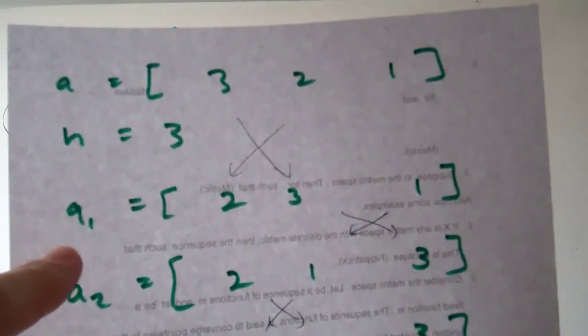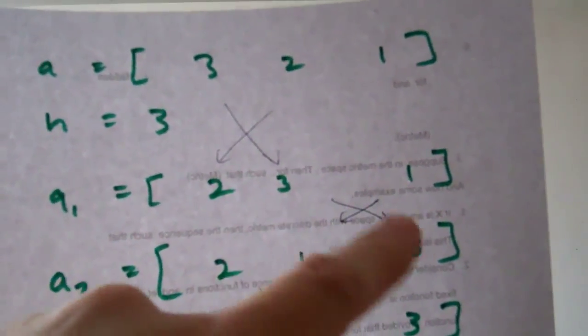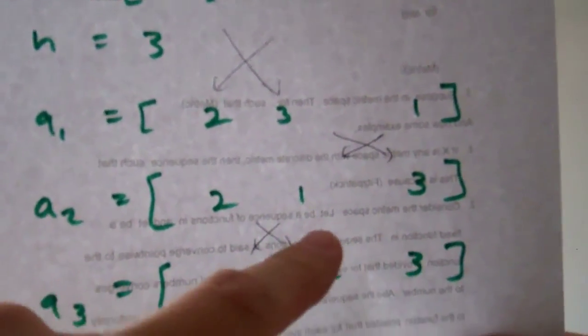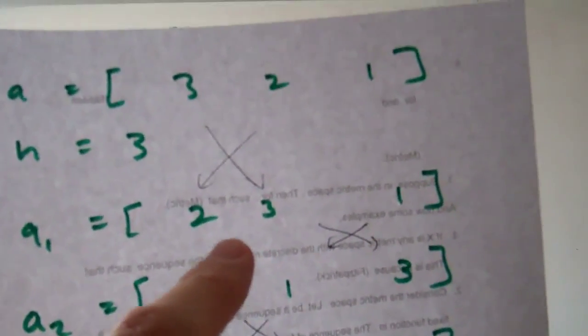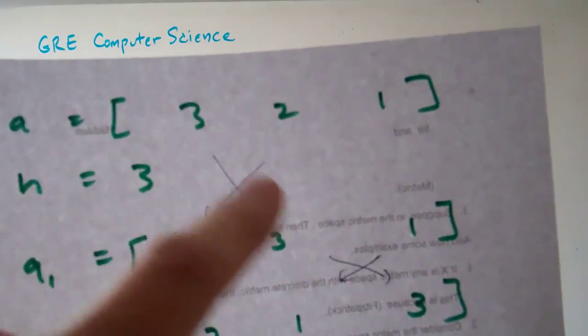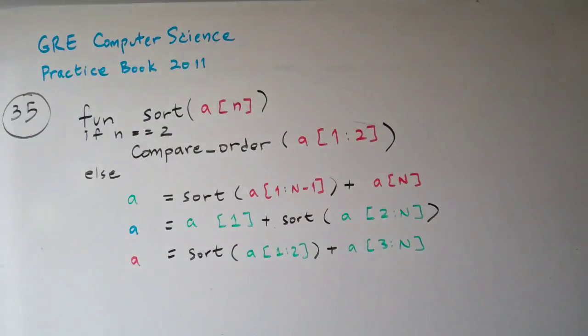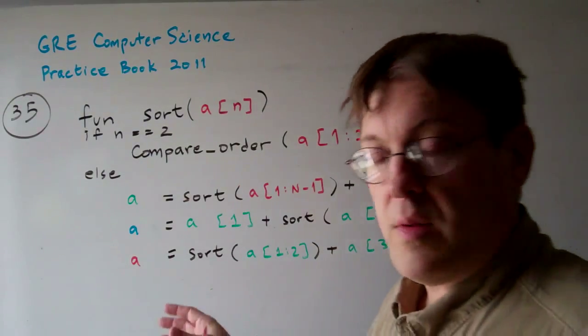On the first pass we would sort the first n minus one elements, so [3, 2] becomes [2, 3], giving us [2, 3, 1]. Then we sort the last n minus one elements, then we sort the first two. So this is basically what happens in this sorting algorithm.